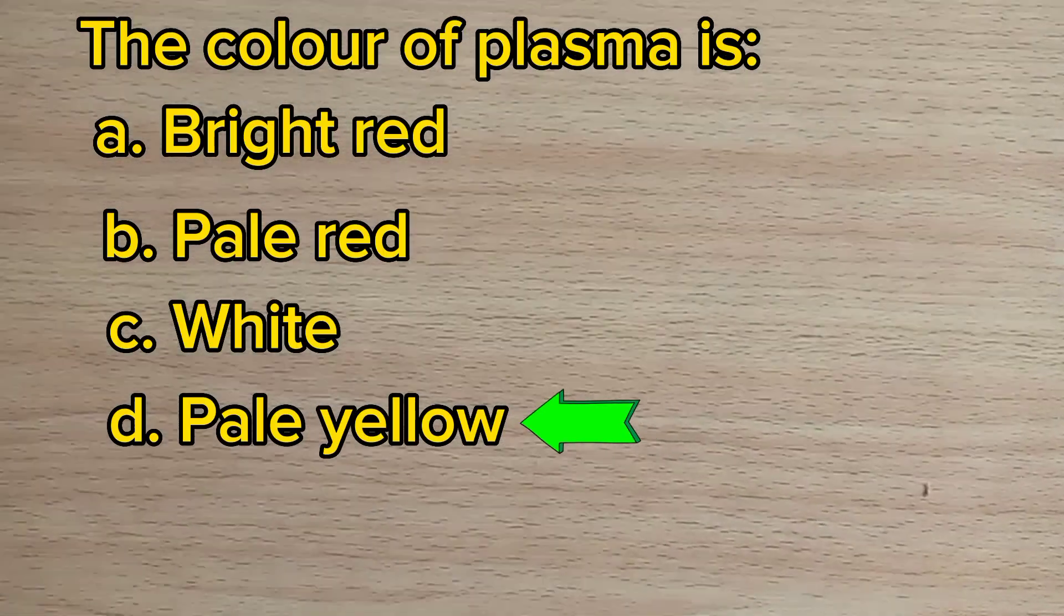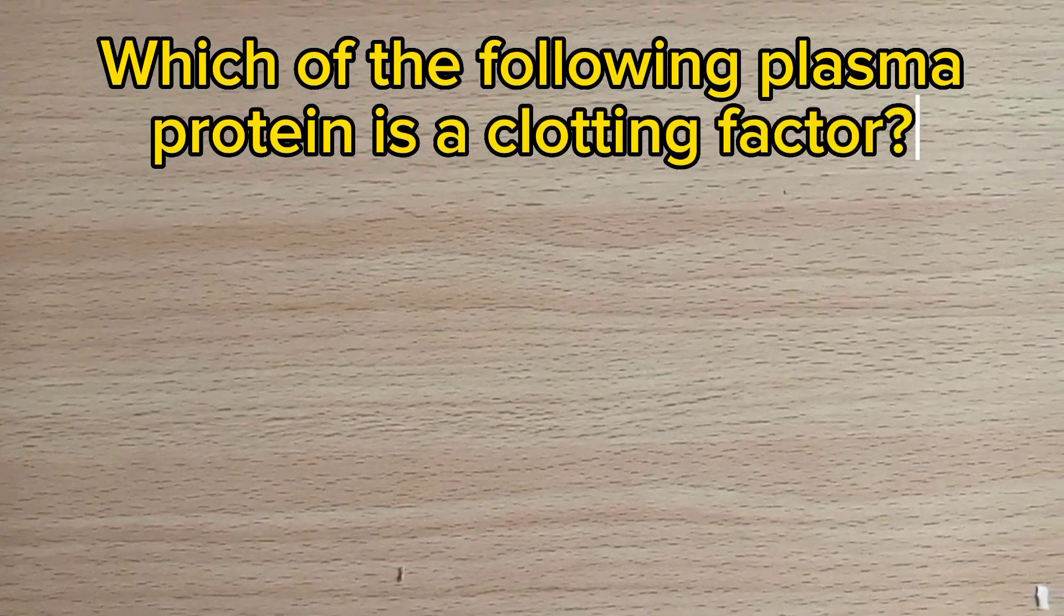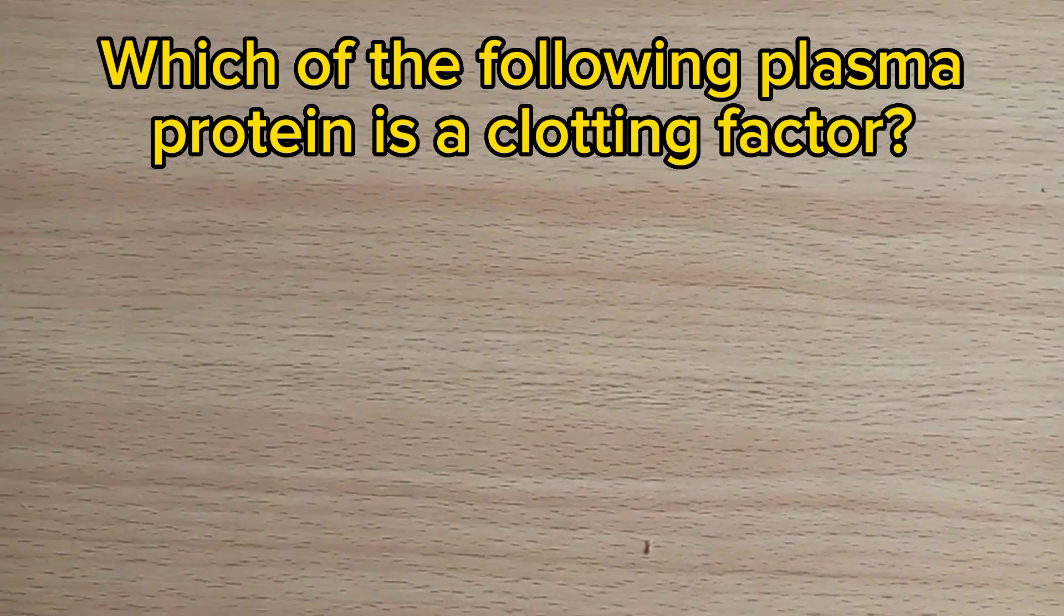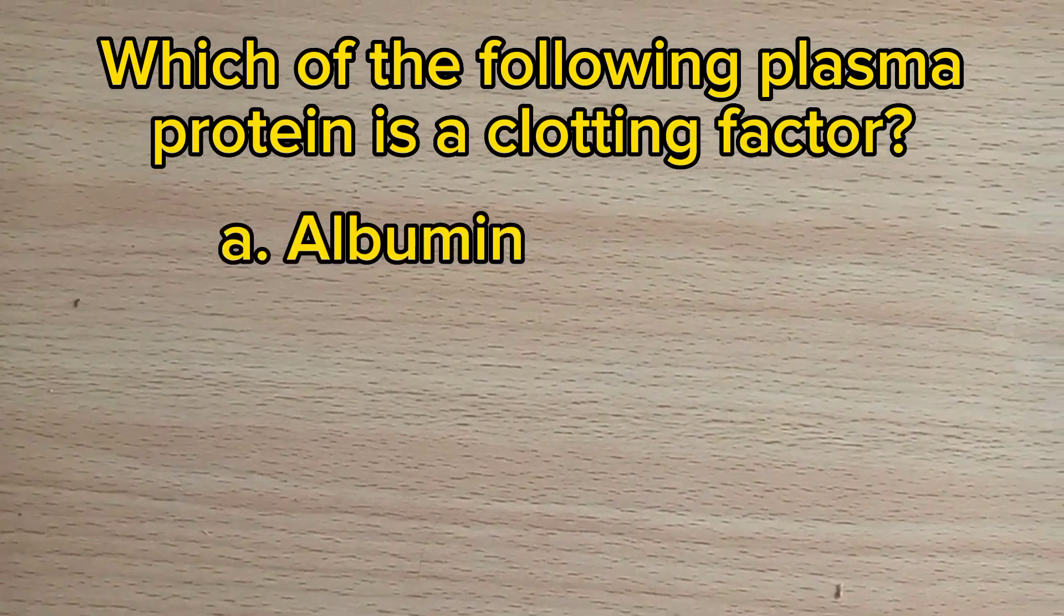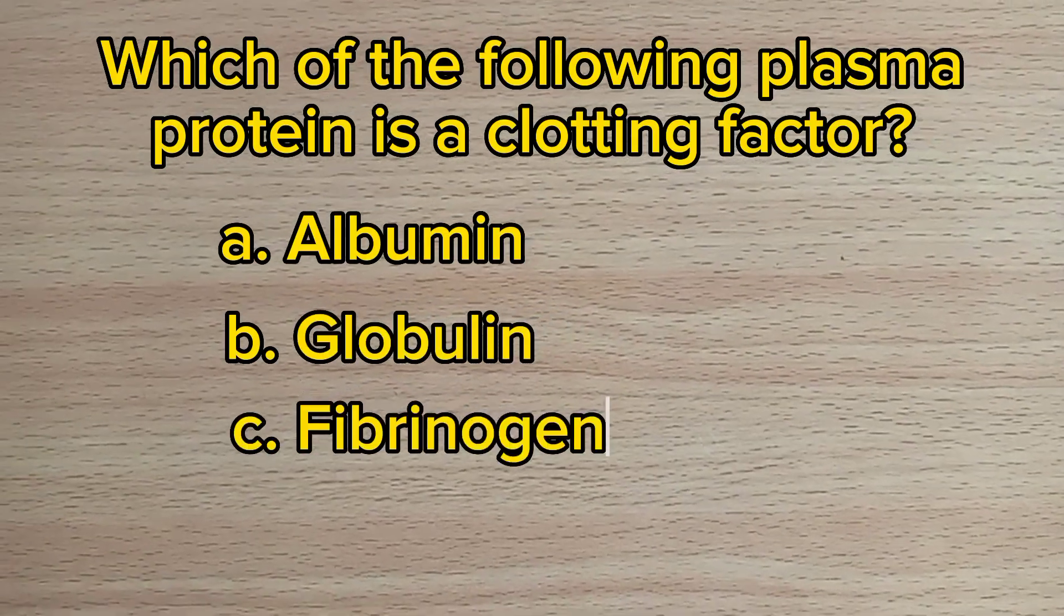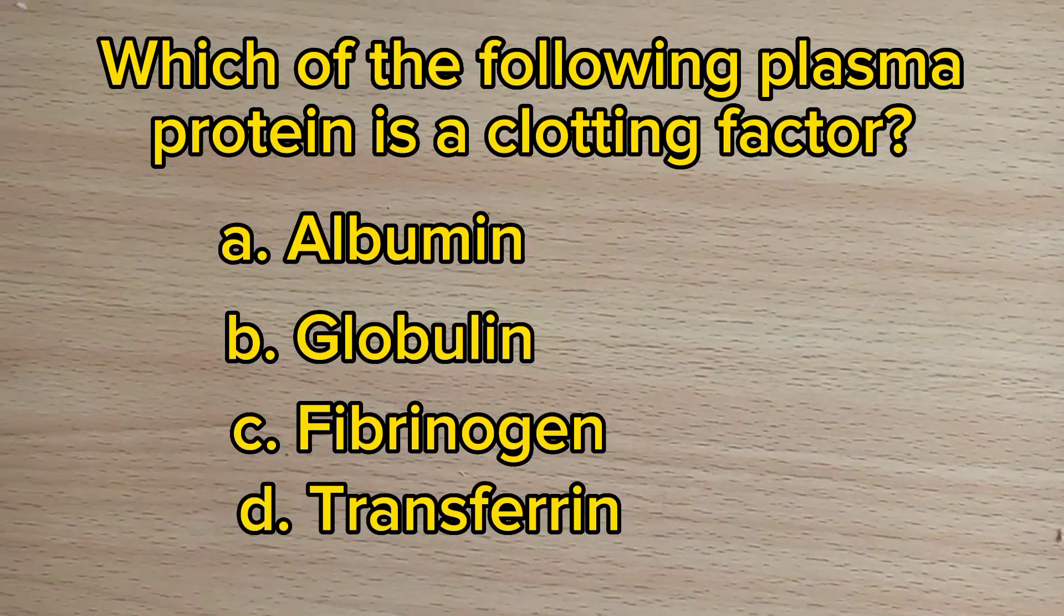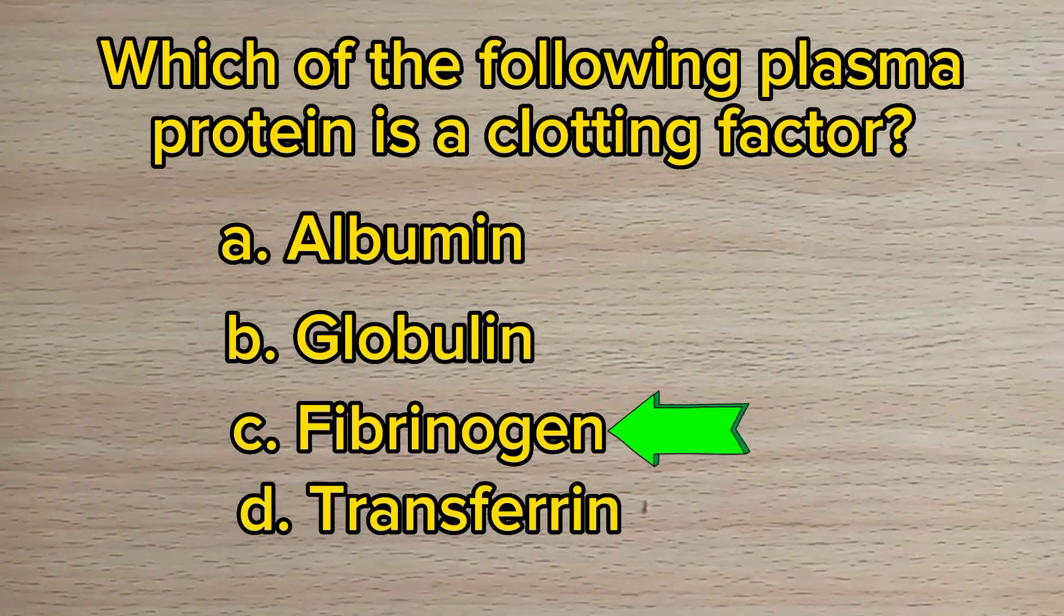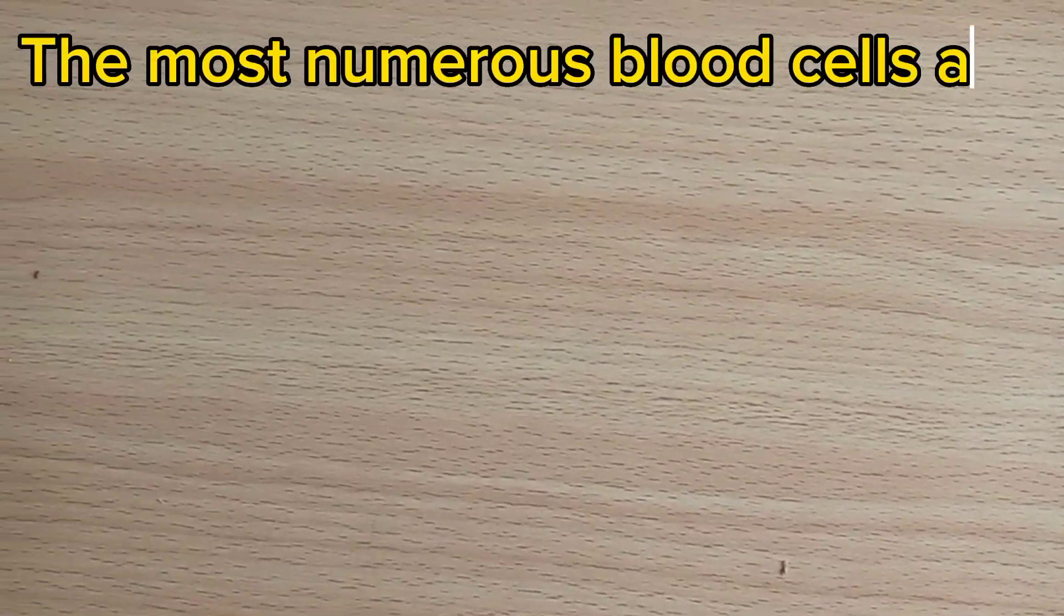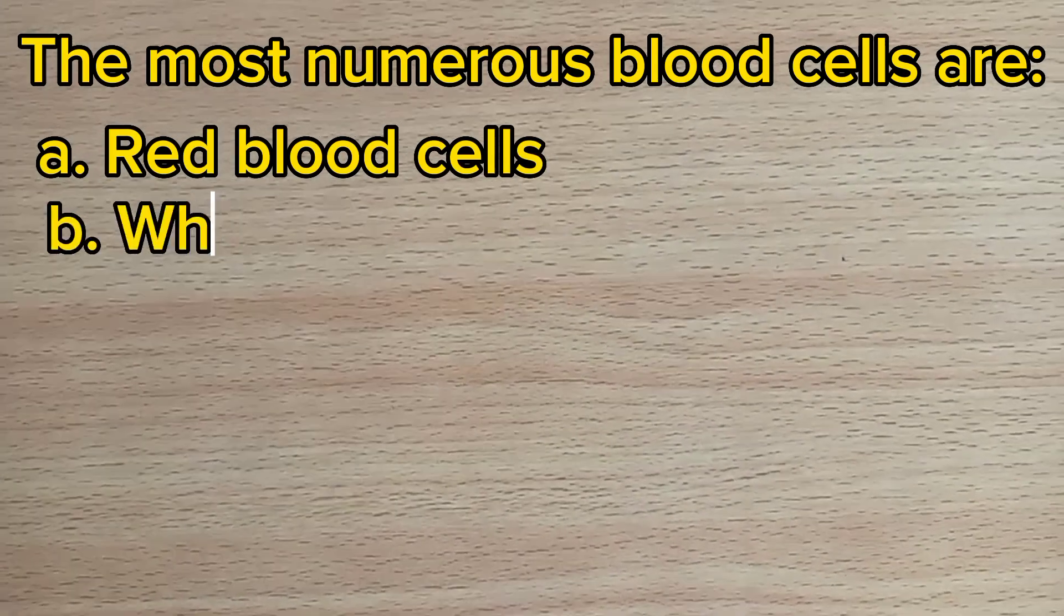Number eight: Which of the following plasma proteins is a clotting factor? A. Albumin, B. Globulin, C. Fibrinogen, D. Transferrin. The answer is C, fibrinogen. Number nine: The most numerous blood cells are: A. Red blood cells, B. White blood cells,